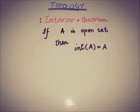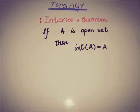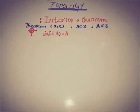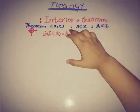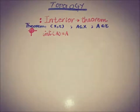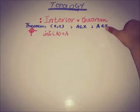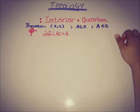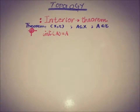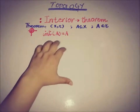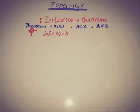It is an obvious property extracted from the definition of the interior of a set, but I think I should prove this. So let's start proving this theorem. The theorem states that if X is a topological space and A is a subset of X, and A is an open set — that is, A is a member of topology tau — then we have to show that the interior of the set A is equal to the set itself.